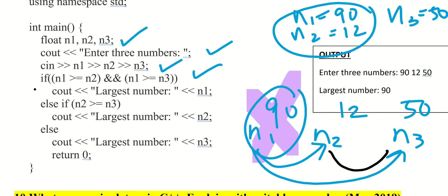The answer uses if, else if conditions. If we use a condition, then we use if, else if, else if. We need our condition: if n2 is greater than n3, then largest is n2.